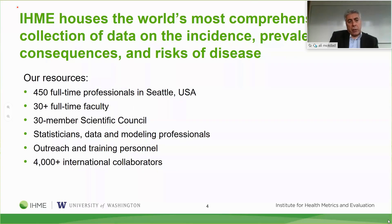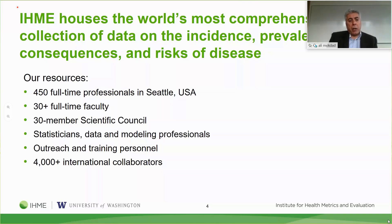We are about 450 full-time professionals here at the University of Washington in Seattle. We have about 35 full-time faculty, a scientific member, and a variety of scientists, statisticians, epidemiologists, modelers, IT, and visualization staff. Most importantly, we have over 4,300 international collaborators working with us in 145 countries.